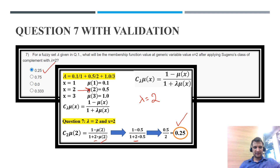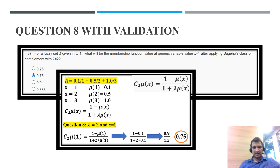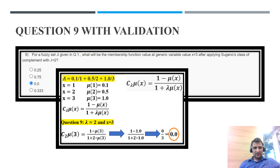Question 8: lambda equals 2 and x equals 1. Putting these values into the formula gives 0.75. Therefore option B is correct. Question 9: lambda equals 2 and x equals 3. Putting these values into the formula gives 0. So option C is the correct answer.